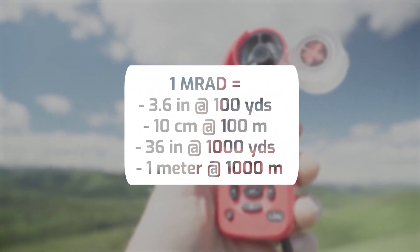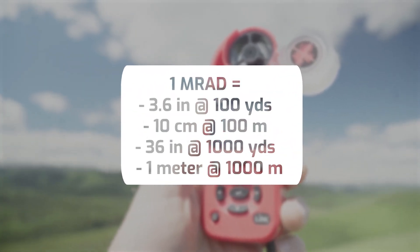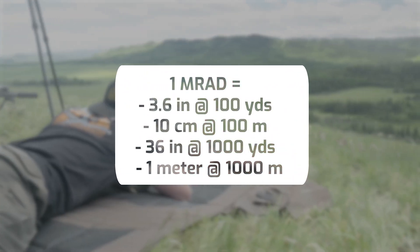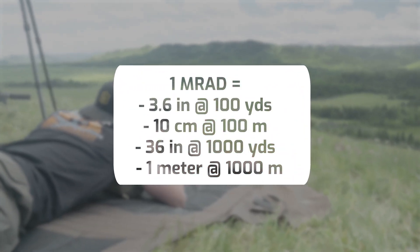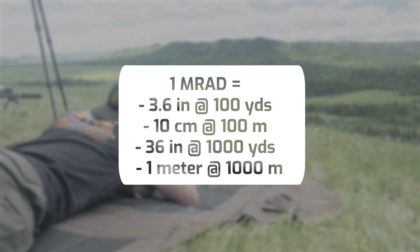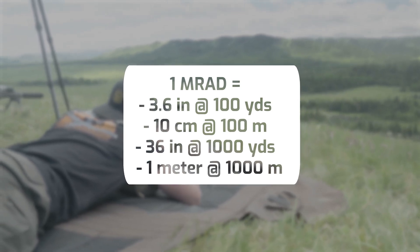At 100 yards, 1 MRAD is 3.6 inches. At a thousand yards it's 36 inches. In metric it's even cleaner — 1 MRAD is 10 centimeters at 100 meters, or 1 meter at 1,000 meters. It's like the metric system of shooting: base 10, really straightforward. There's gonna be a test later so I hope you memorized all of that.